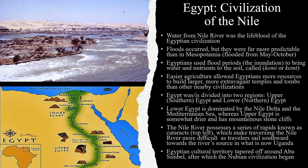Agriculture was easier for the Egyptians than it was for the Mesopotamians, allowing them to put more time into building larger, more extravagant monumental architecture, especially temples and tombs. Egypt was divided into two regions: Upper Southern Egypt and Lower Northern Egypt, seen here on this map. It can be confusing because Lower Egypt is in the north and Upper Egypt is in the south, if you're using a north-oriented map.